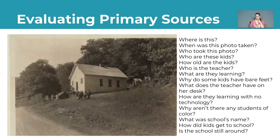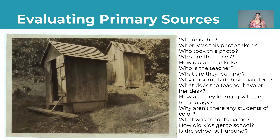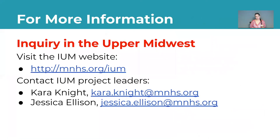You can layer primary sources upon other primary sources to expand the story. Here's an image of the exact same schoolhouse from the outside, giving students different questions to ask about this space. You can continue adding more images, such as the outhouses behind the schoolhouse, to give kids a more complete picture of what they're evaluating. That's a quick look at how we can find and evaluate primary sources. For more information about the Inquiry in the Upper Midwest project, visit our website or contact project leaders Cara Knight and Jessica Ellison. Thanks so much.